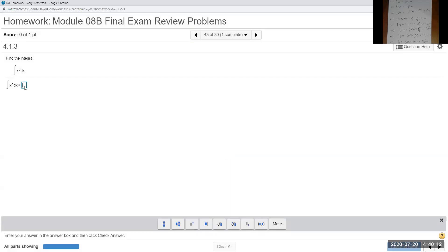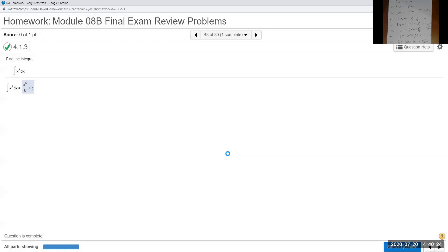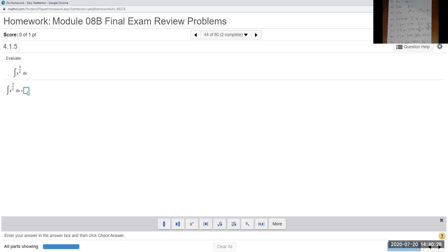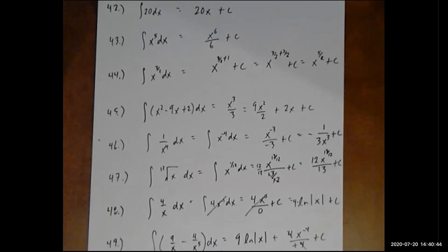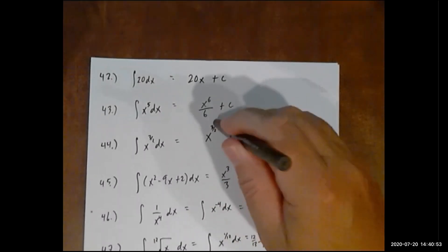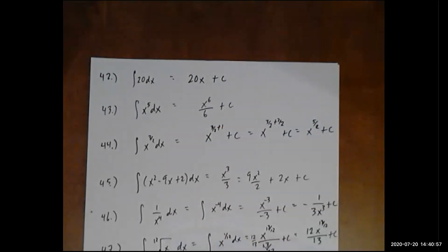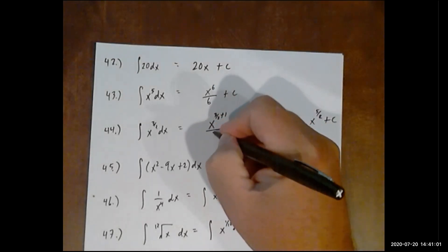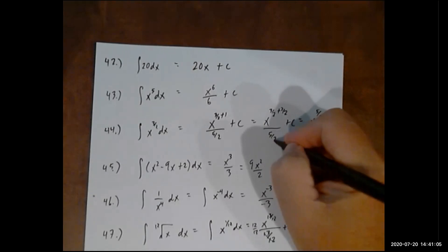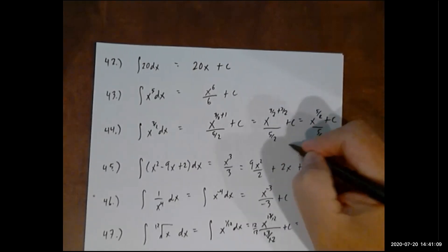All right. The next one we did, we said this was x to the sixth over six. Once again, plus c. I almost forgot. This one we said was, I look at my notes. You know what? I did that one wrong. Aha. Maybe some of you noticed that. Let's go back. I forgot 44. I got so busy showing you what the exponent would be that I forgot to put it in the bottom.